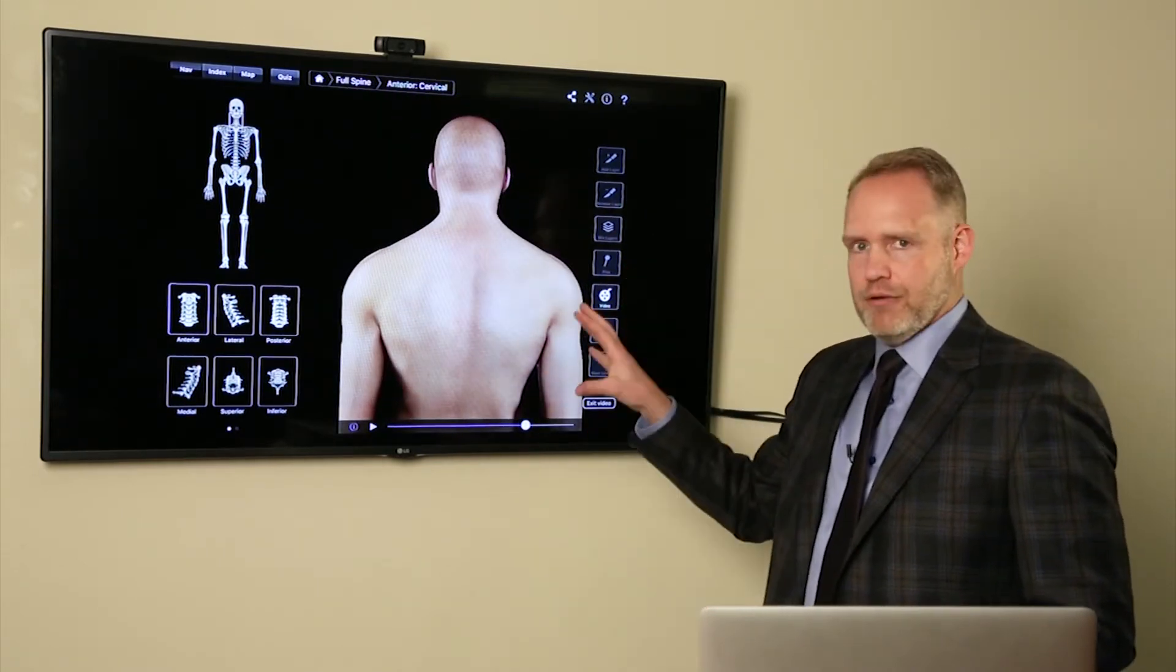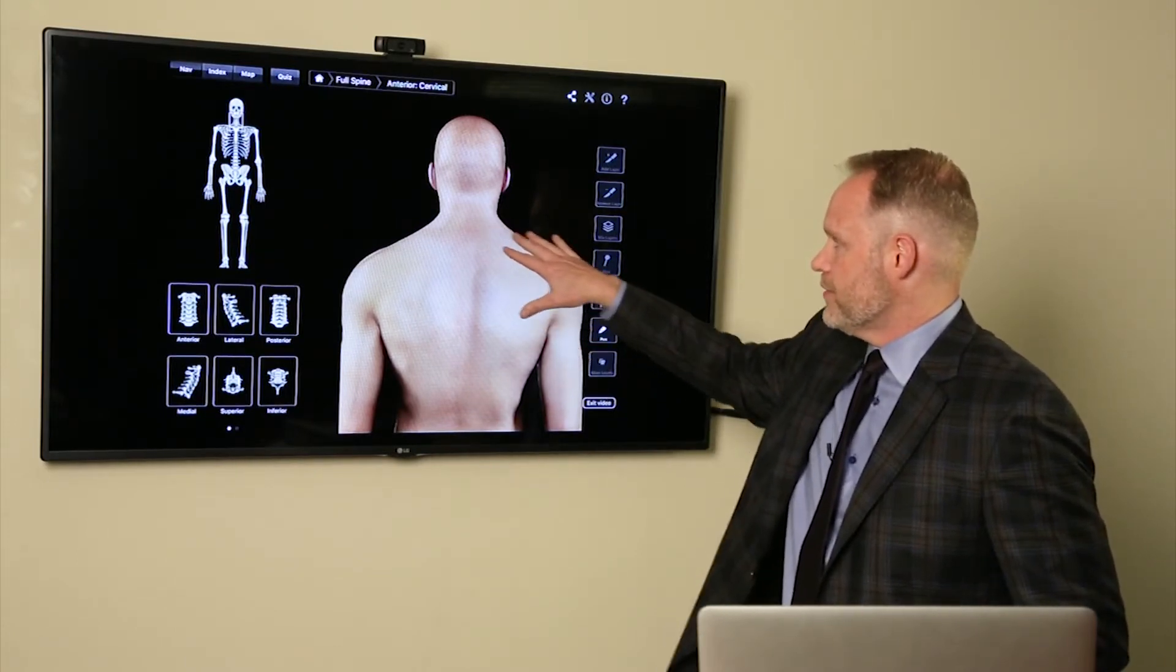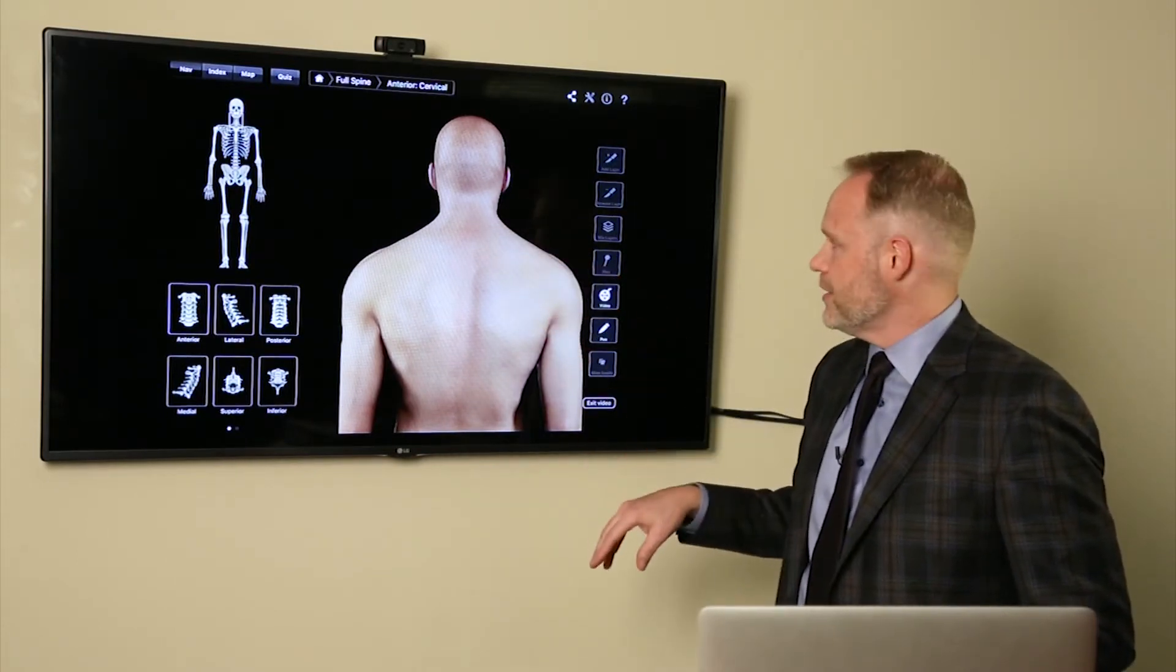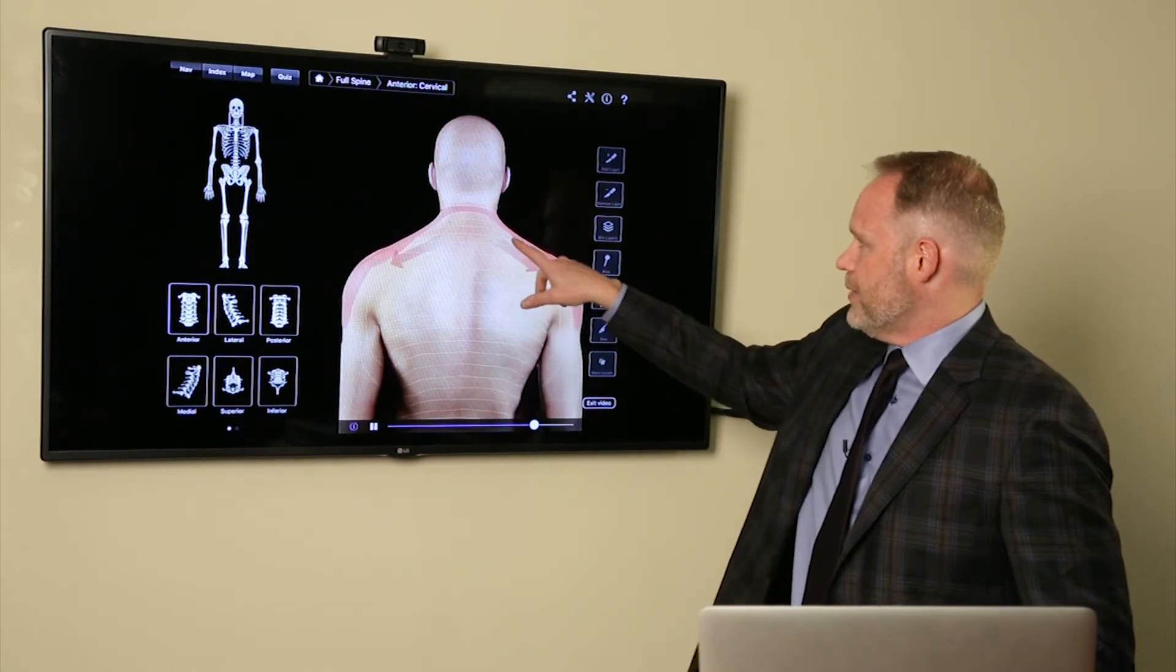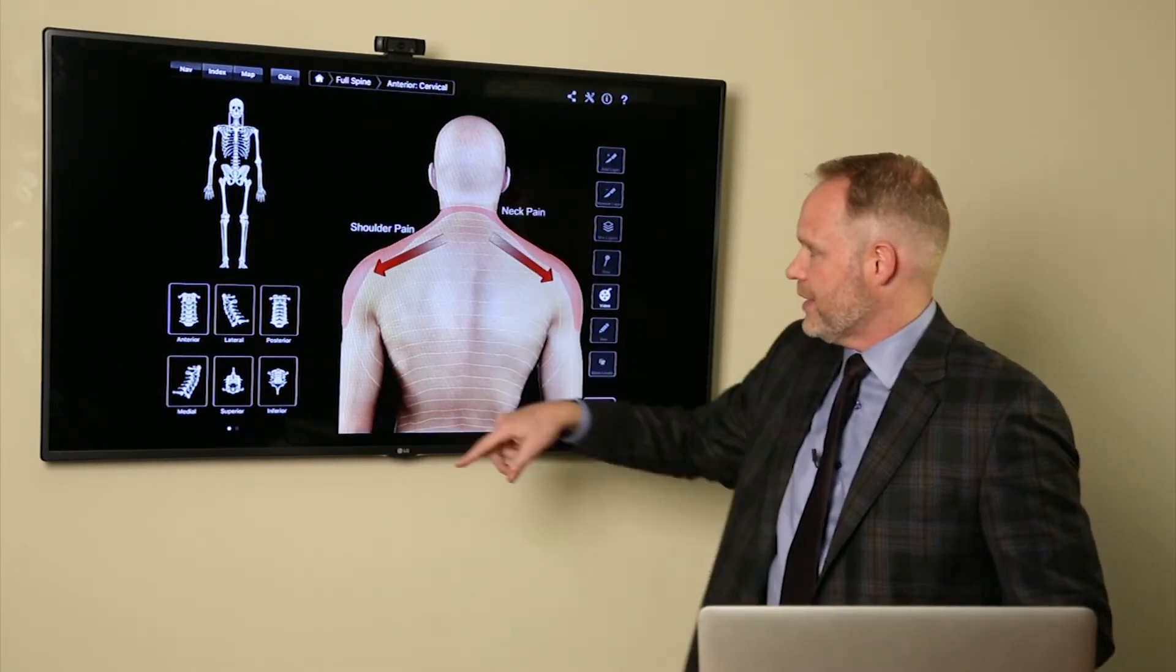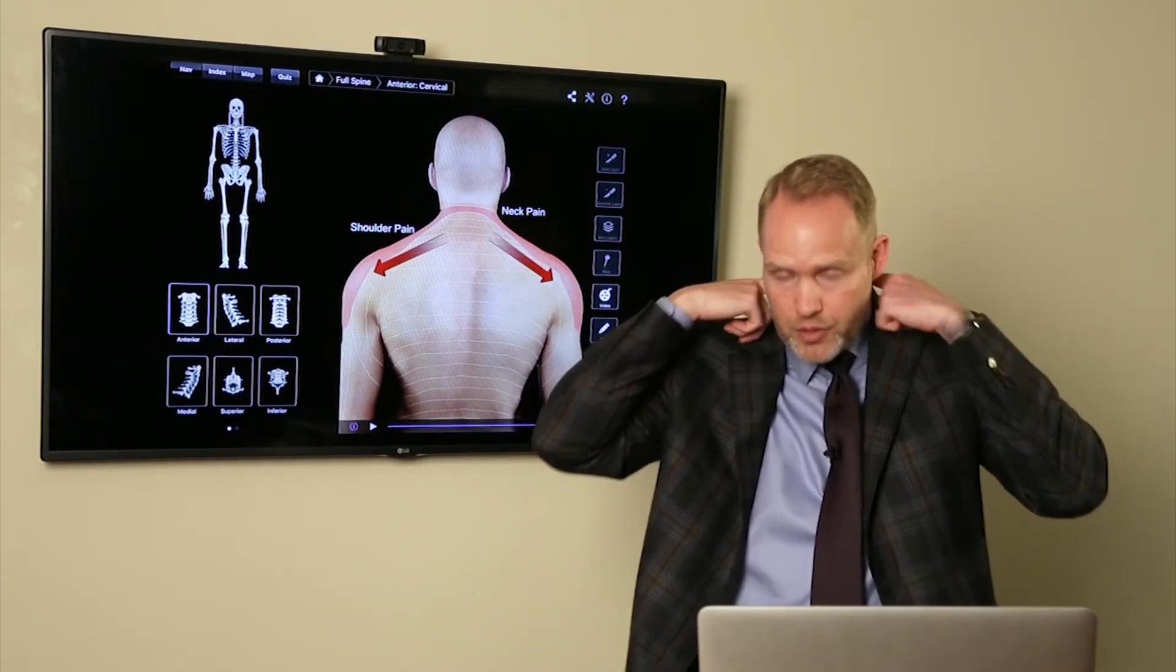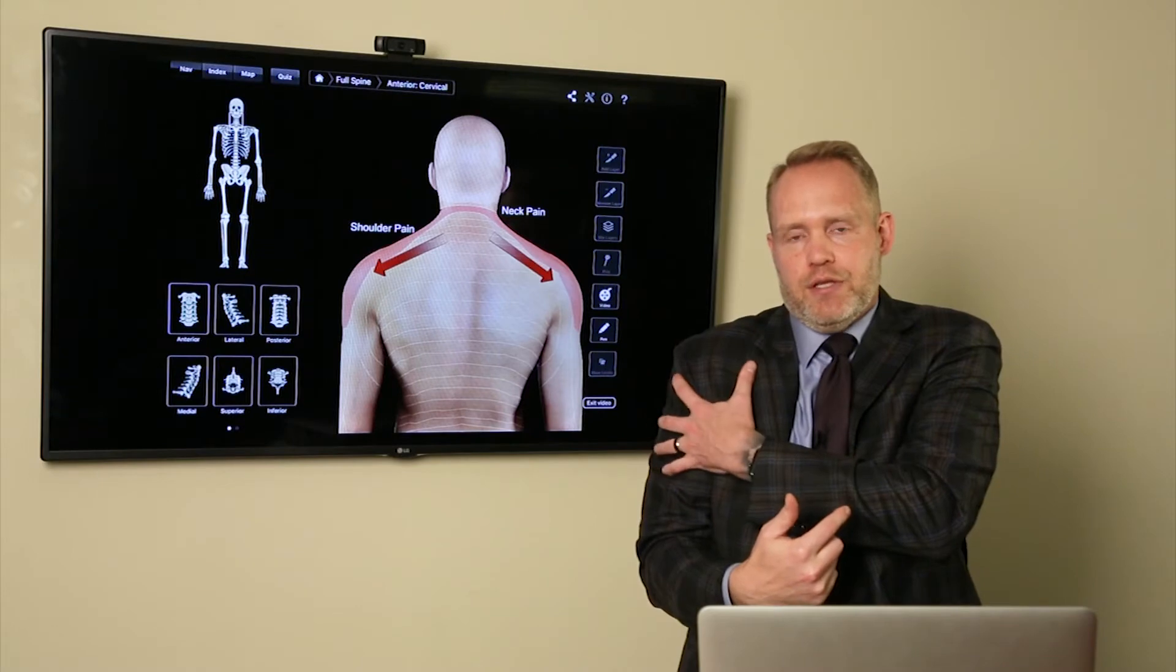And what it does, it can create what's called referred pain because there's nerves that exit around that area. Those nerves can become aggravated. And so you're going to see here in a second, this gentleman who has the issues up there is now having shoulder pain, because that's the area that's involved. Those nerves that exit, they actually go down and they innervate the shoulders.